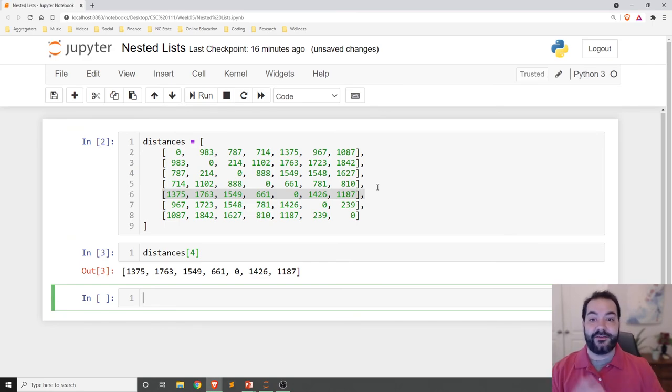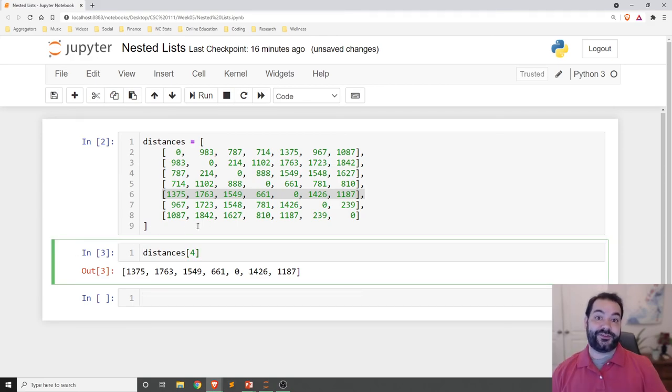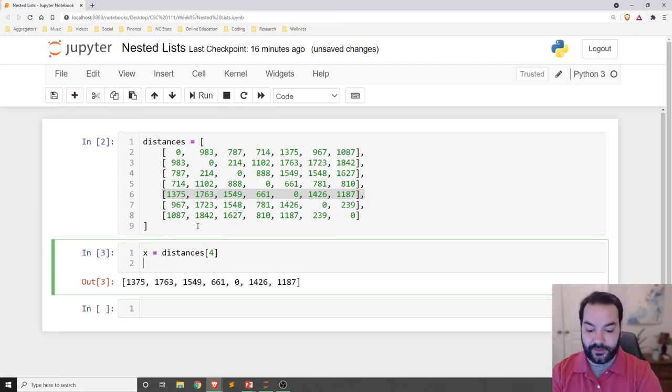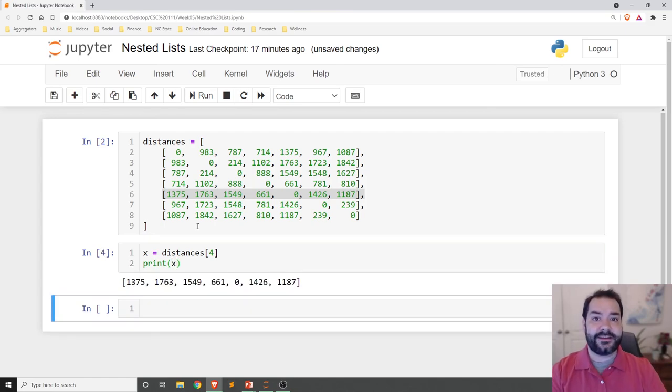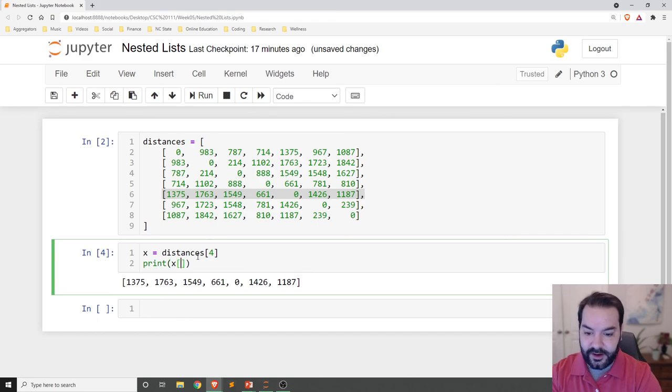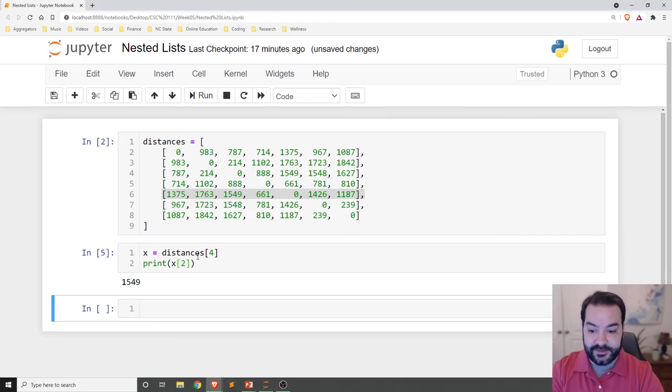1375, 1763, 1549, et cetera, et cetera. Once again, if I were to save this as a variable, that didn't change anything. So, just to continue showing this, that didn't change anything. I just said, oh, well, make this list a variable. And then, the same kind of way, I can come in and treat this variable as if it is a list and print out that 1549.